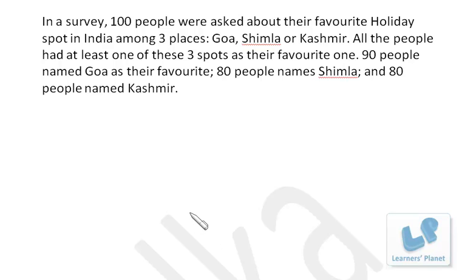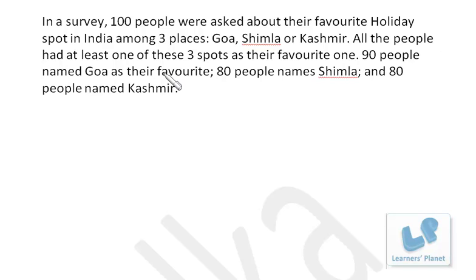Let's solve a set of problems based on Venn diagrams and set theory. In a survey, 100 people were asked about their favorite holiday spot in India among three places: Goa, Shimla, or Kashmir. All people had at least one of these three spots as their favorite. 90 people named Goa, 80 people named Shimla, and 80 people named Kashmir.